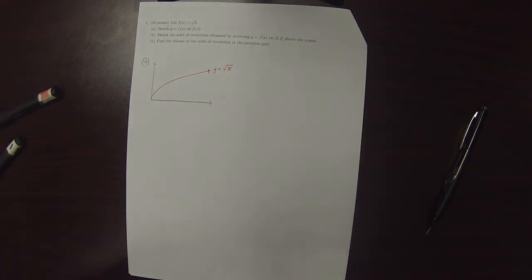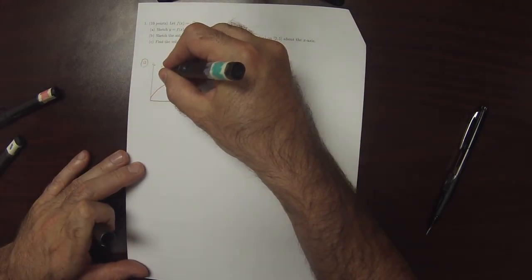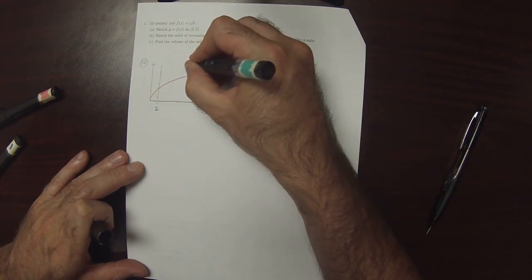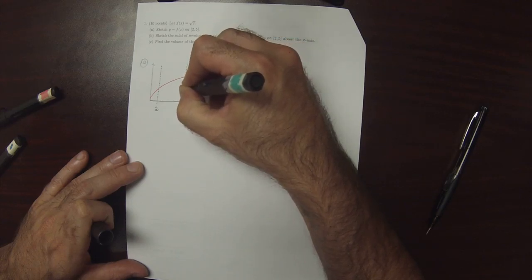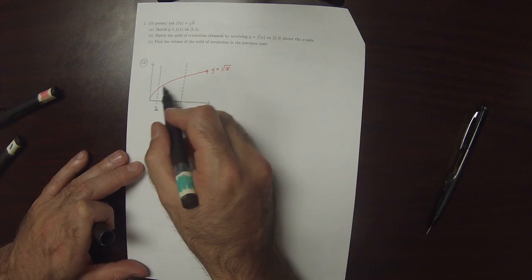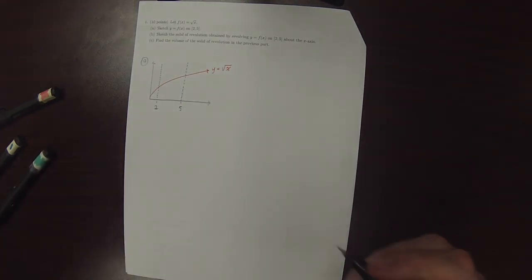And then we're just interested in it between 2 and 5. So from 2 to 5. So just this much. So part b.